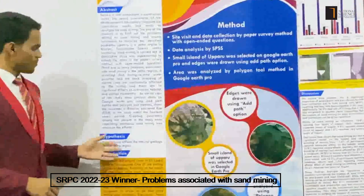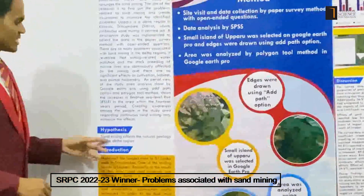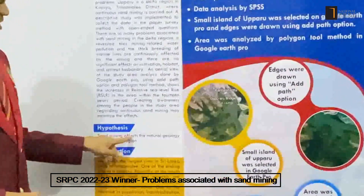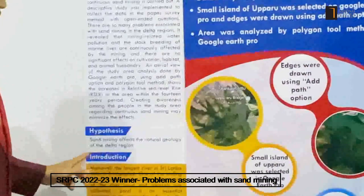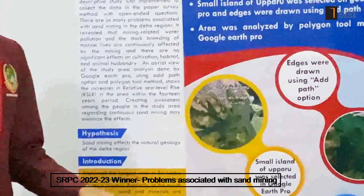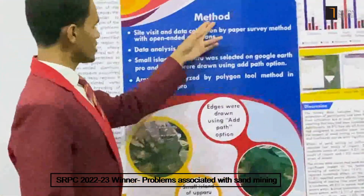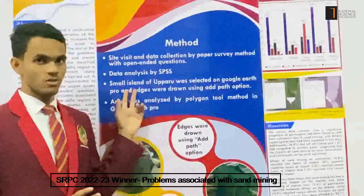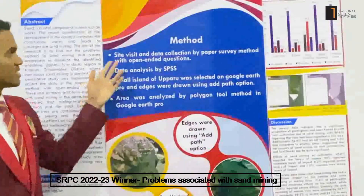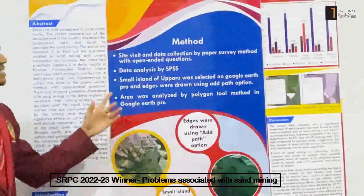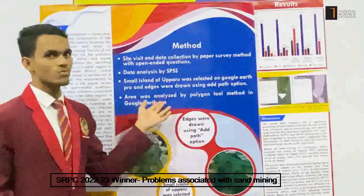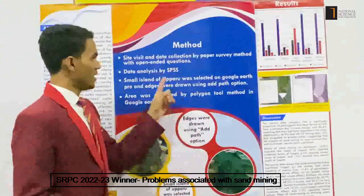The hypothesis of my research is that sand mining affects the natural geology of the Delta region. Now we can move to the methodology part. I have used two methodologies: the first one is the qualitative one and the second one is the quantitative one.